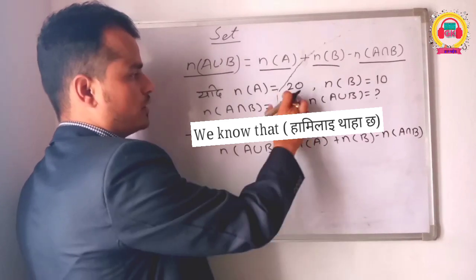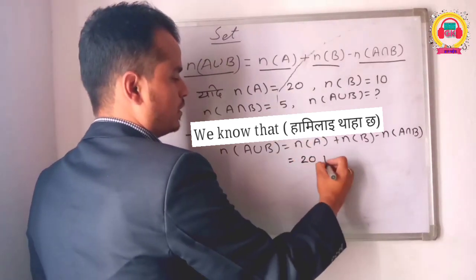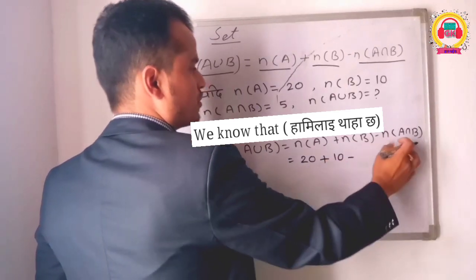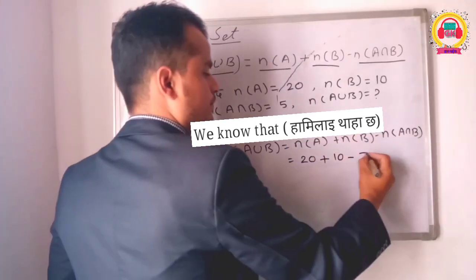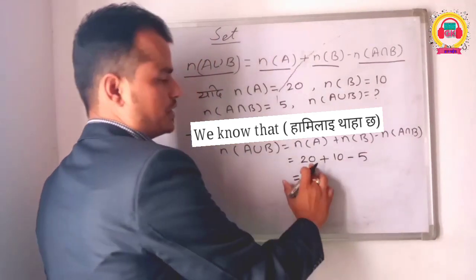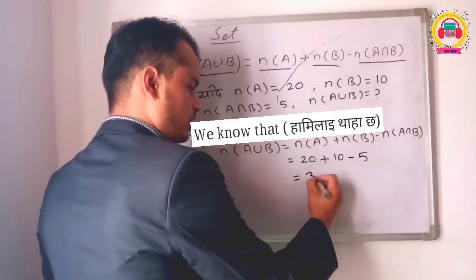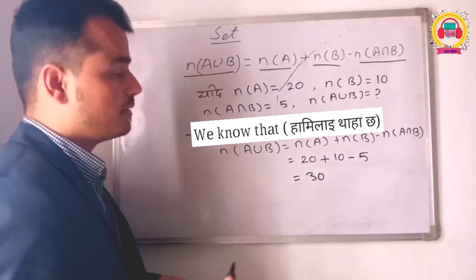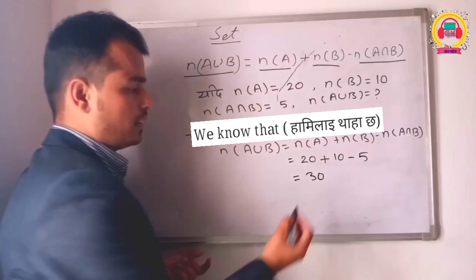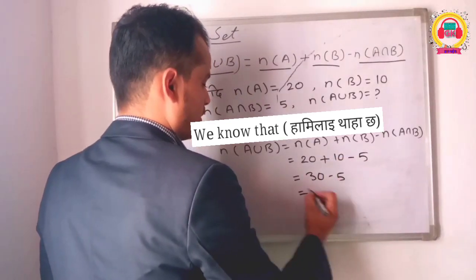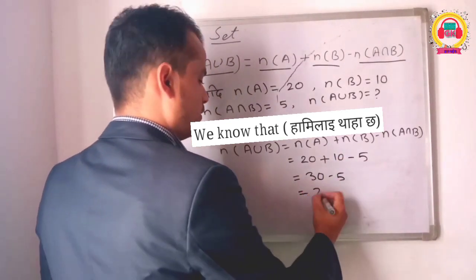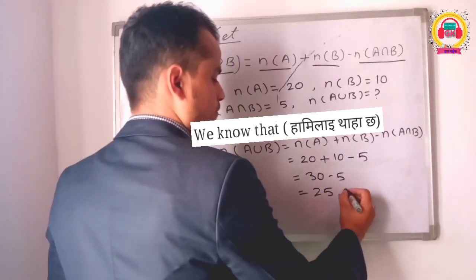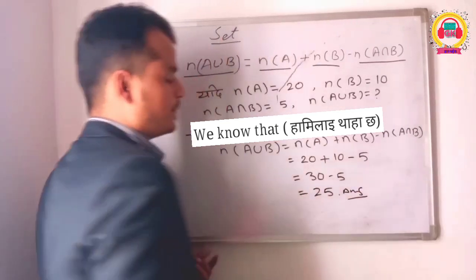Replace the values. Number of A union B equals 20 plus 10 minus 5. So we repeat the same equation and the answer is 25.